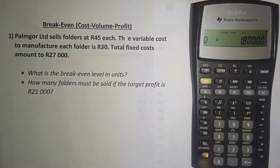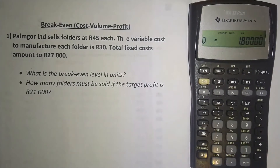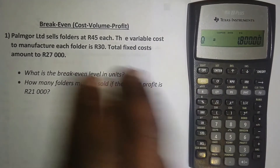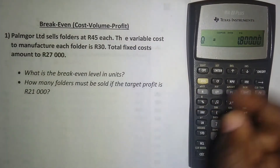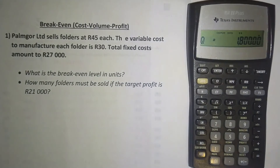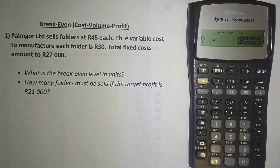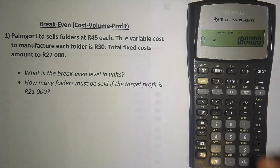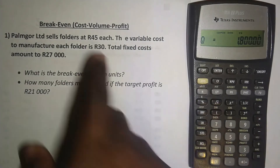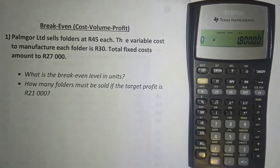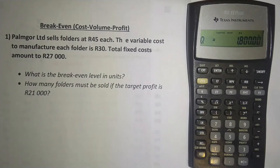Press the CPT button — the compute button on the top left of the calculator. It has given us the quantity we need to sell to break even: 1,800 units. And obviously if you want the break-even in sales value, you just take the 1,800 and multiply it by 45 rand to get your answer.